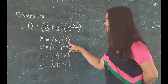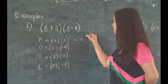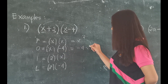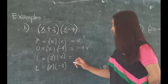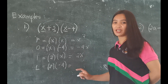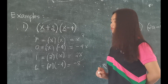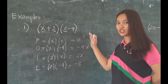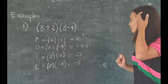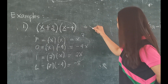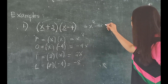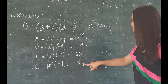So let us solve. x times x is equal to x squared. Next, x times negative 4 is equal to negative 4x. Next, 2 times x is equal to 2x. And 2 times negative 4 is equal to negative 8. We are going to arrange the terms according to the highest exponent or highest degree, so we have x squared, then negative 4x, then positive 2x, then negative 8.